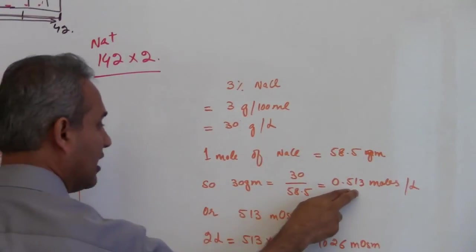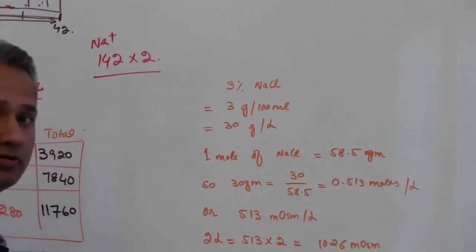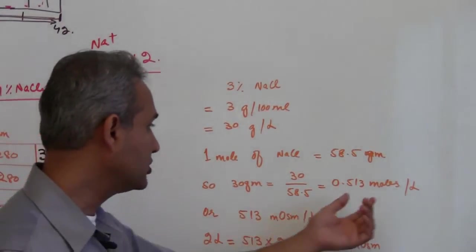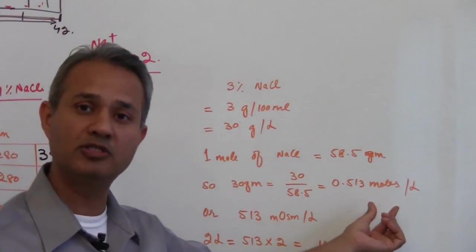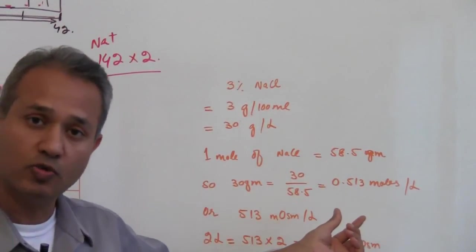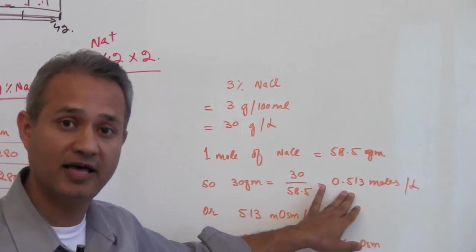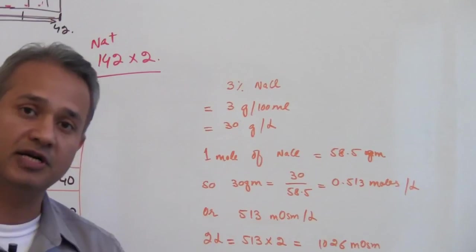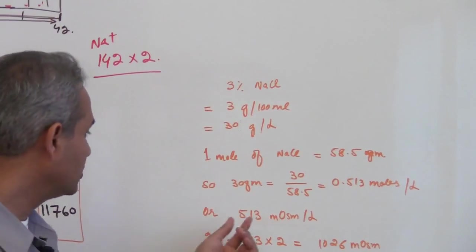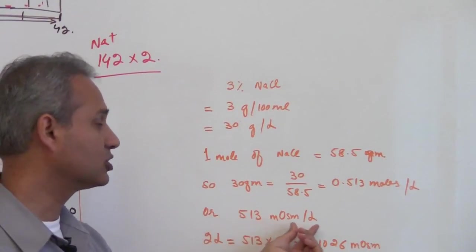Now it is half molar solution. Remember we talked about it before that usually we do not speak in moles terms or osmol terms, we speak in milliosmol terms. So what we do is we multiply this with 1000 and that brings the unit down to milliosmol. So 513 milliosmol per liter.